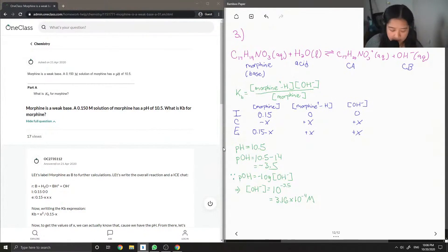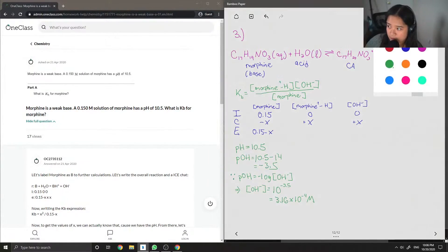So since we know that, I'm just going to sub it into our ice table. Since it's a monobasic reaction, that is the same. This 3.16 times 10 to the negative 4 will be the same for both the concentration of OH minus and for the concentration of the protonated morphine.